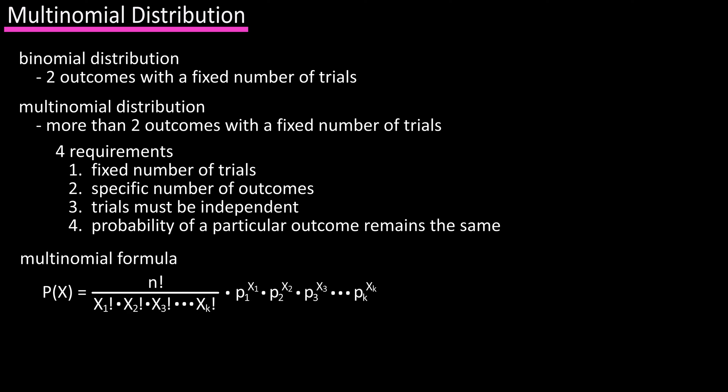The formula for the multinomial distribution is: P(x) = n! / (x1! · x2! · x3! · … · xk!) · p1^x1 · p2^x2 · … · pk^xk, where x1 + x2 + x3 + … + xk = n, and p1 + p2 + p3 + … + pk = 1.